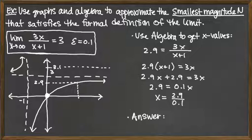We get x is equal to 2.9 divided by 0.1. If we want to move the decimal on both the top and the bottom over by 1, what we're really doing is multiplying top and bottom by 10. So we'd have 29 over 1, which would be just 29.